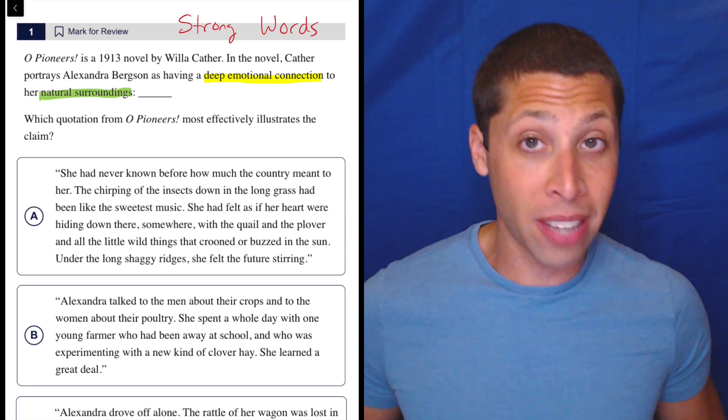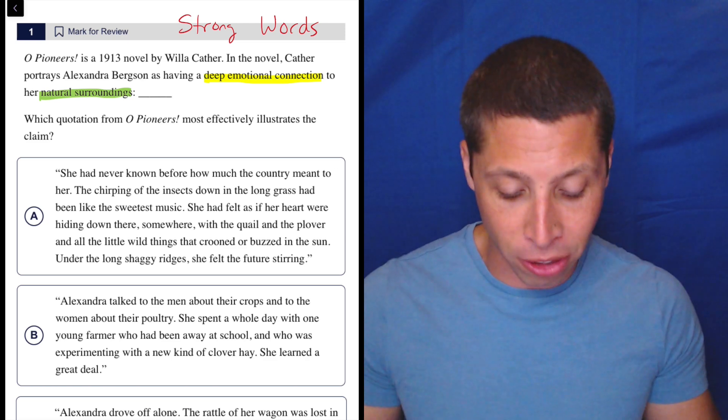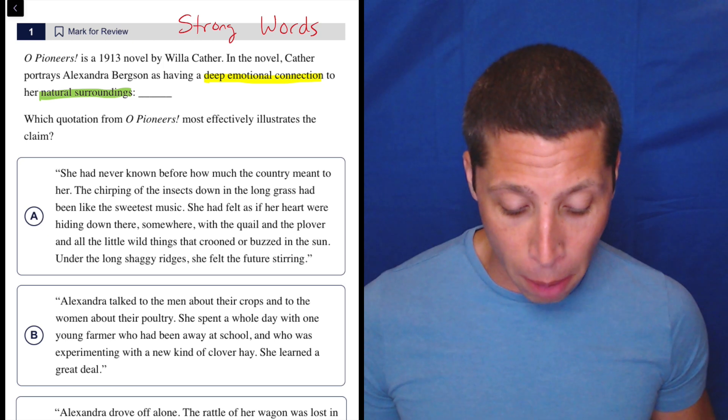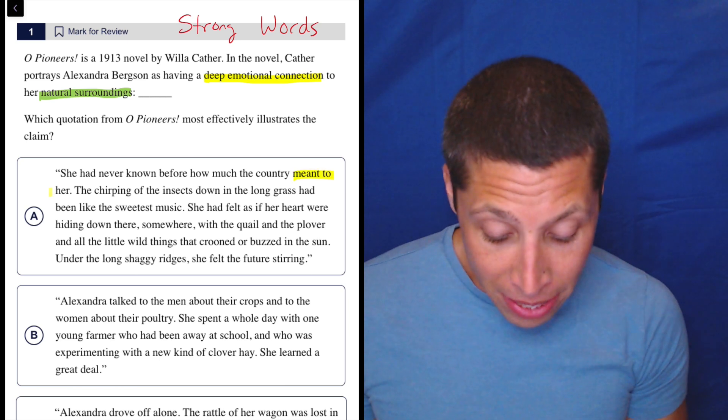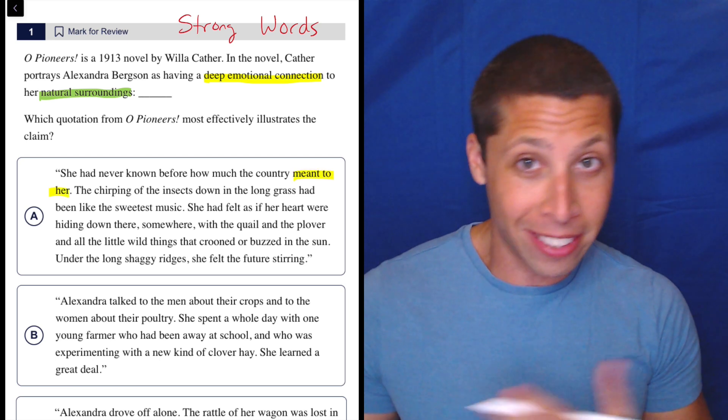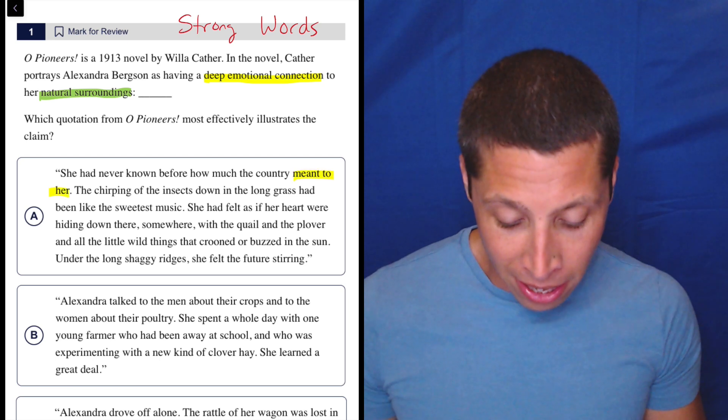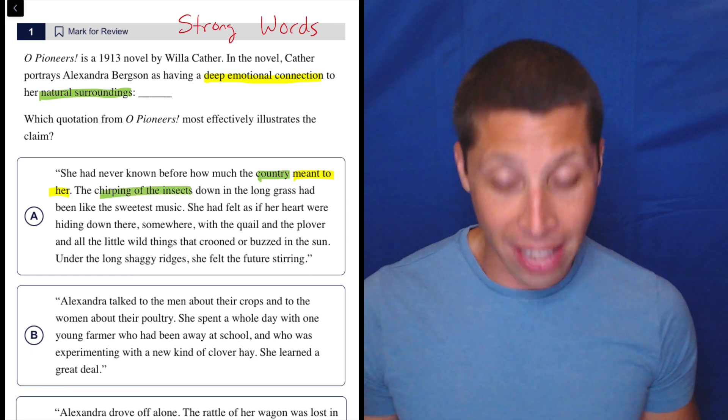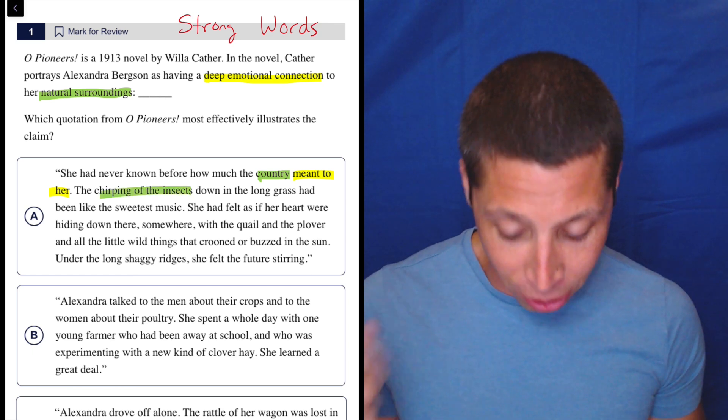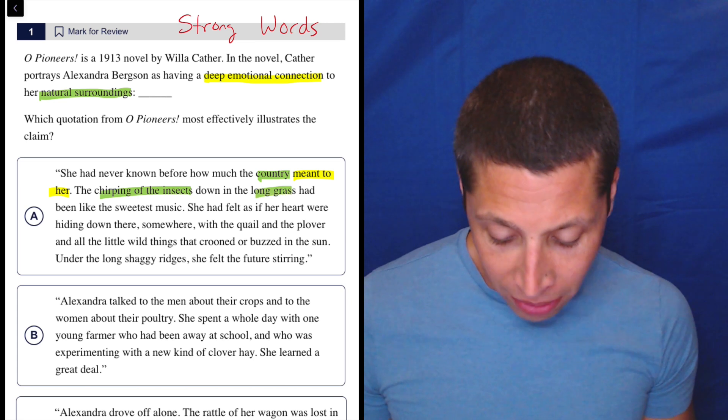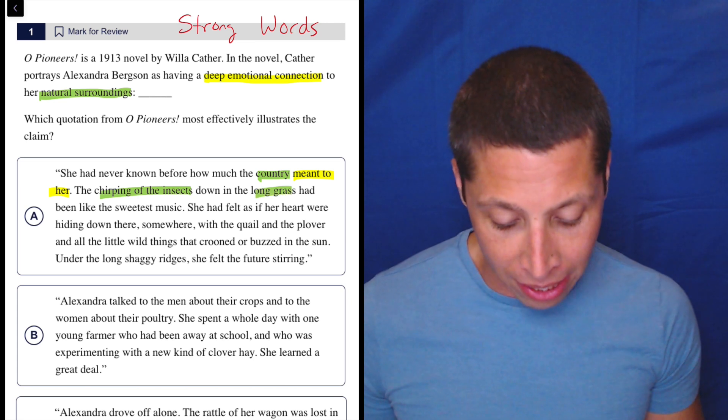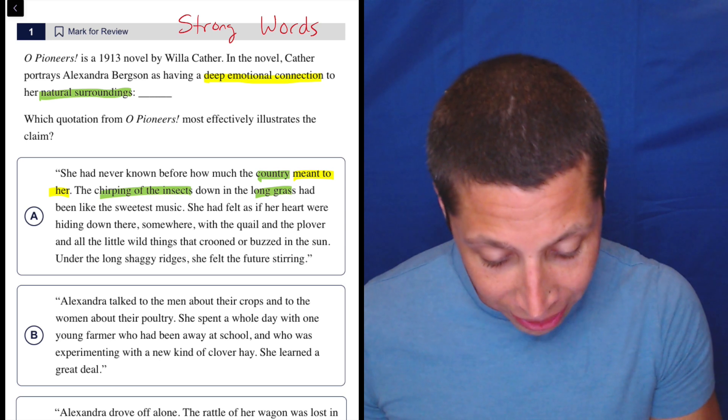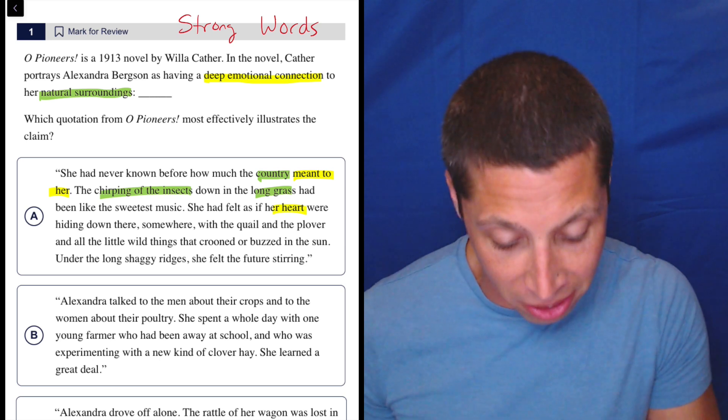Let's take a look at choice A and just see what pops up. What kind of matches with a deep emotional connection or natural surroundings? She had never known before how much the country meant to her. Well, something means a lot to you, that sounds like a deep emotional connection. It also says the country, so that's maybe the natural surroundings. The chirping of the insects down in the long grass had been like the sweetest music. She had felt as if her heart were hiding down there. So I guess that's about her heart, so maybe it's a deep emotional connection.